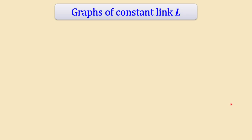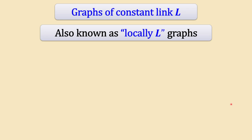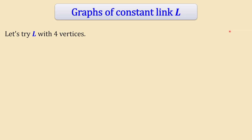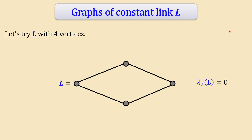These are called graphs of constant link L, also known as locally-L graphs. Let's try L equal to the four-cycle, a popular four-vertex graph. Its second largest eigenvalue is zero, which is certainly smaller than 1/2.